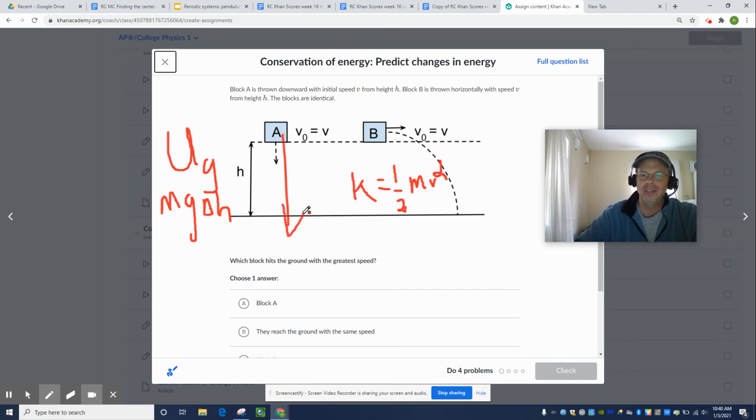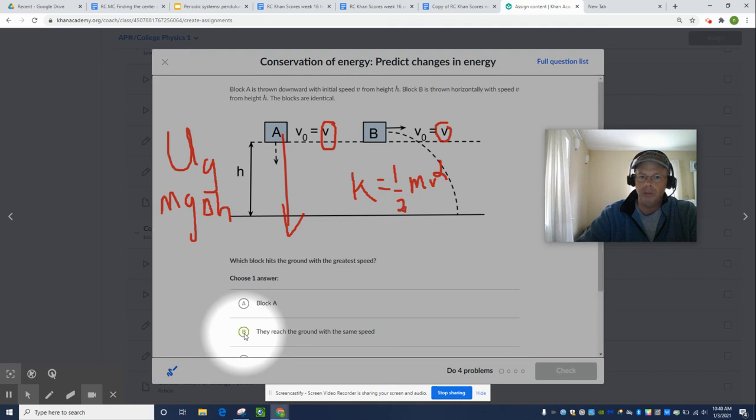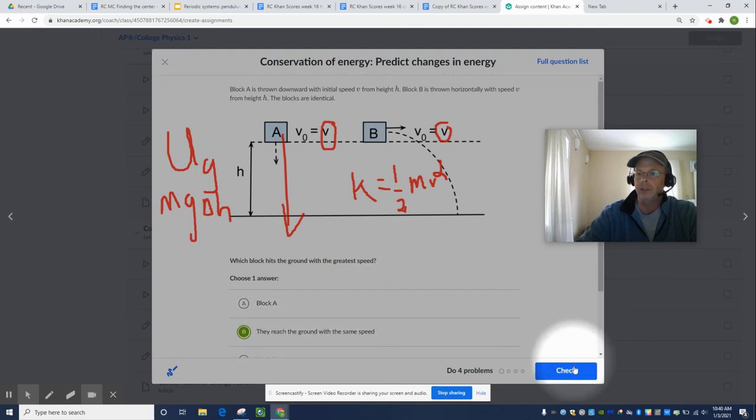They have the same change in gravitational potential energy, and they start with the same kinetic energy. They don't have any external forces acting on them if we include the Earth in the two-mass system, and so they reach the ground at the same speed. They will have the same final energy, because they have the same initial energy.